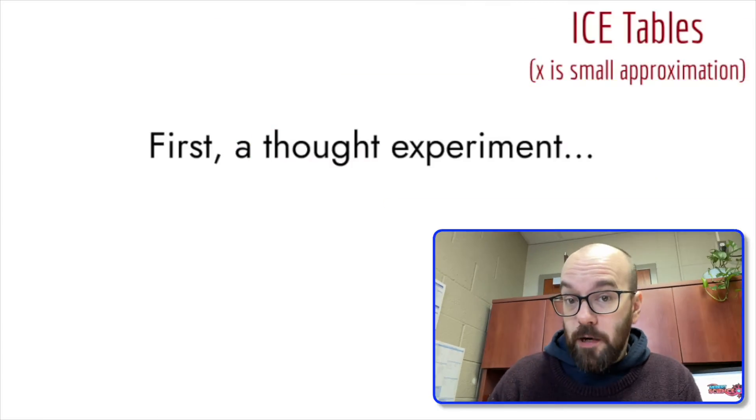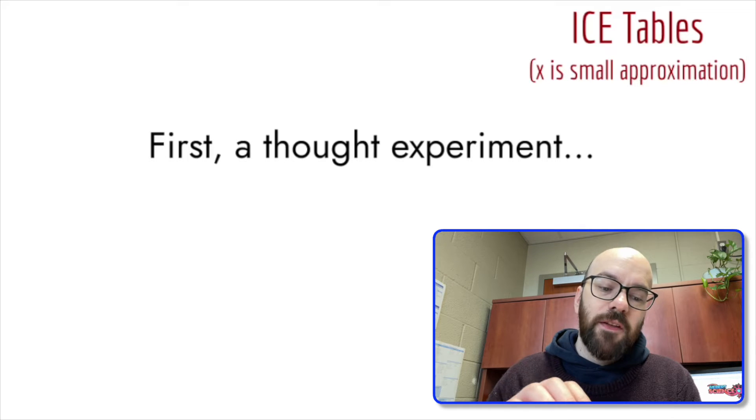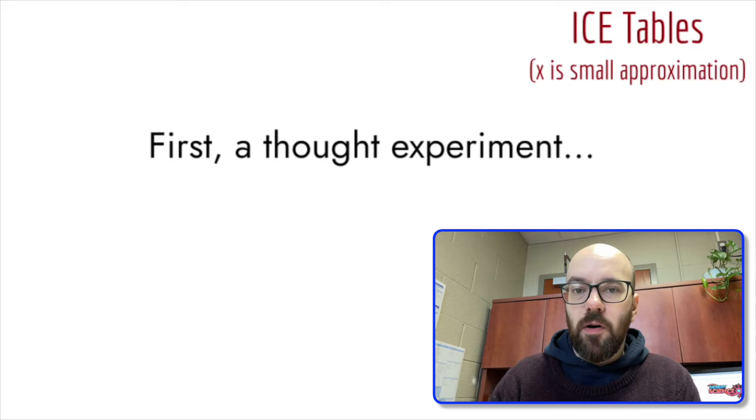In this video, we're taking a look at the x-is-small approximation that we use in ICE table problems in chemistry. I'm assuming you know how to set up an ICE table and how to solve an ICE table problem, but this is going to give you a tool you can use whenever you get an answer that's going to require the quadratic formula — a way to skip that. But first, we need a thought experiment to understand why this approximation would be valid.